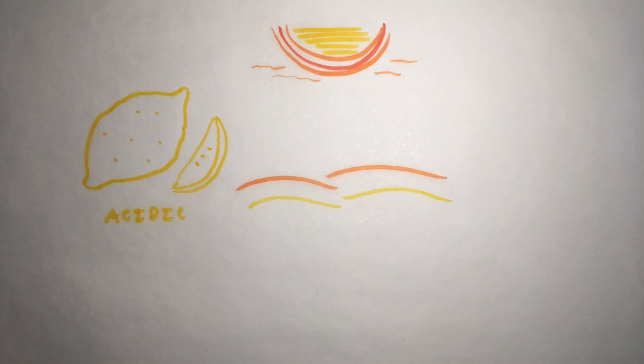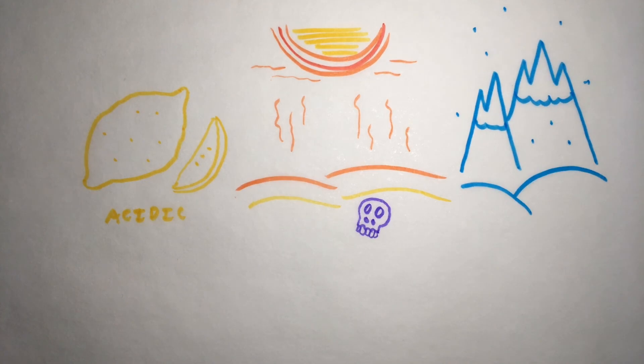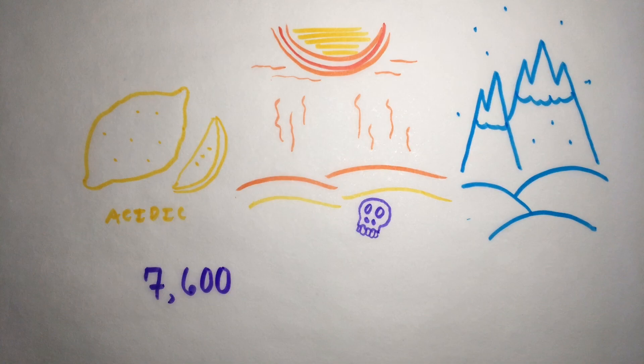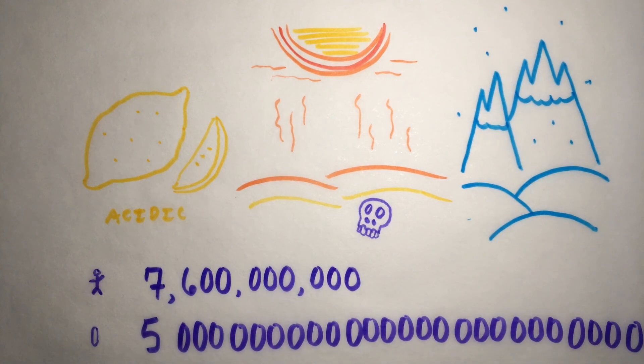Some live in extremely acidic environments and some in extreme hot or extreme cold. There are 7.6 billion people on Earth and 5 million trillion trillion bacteria, five with thirty zeros following it.